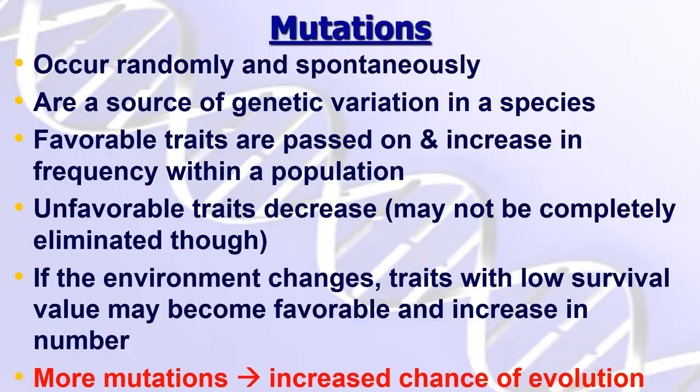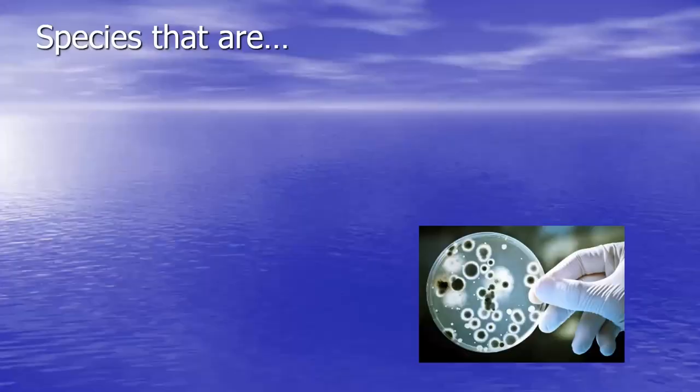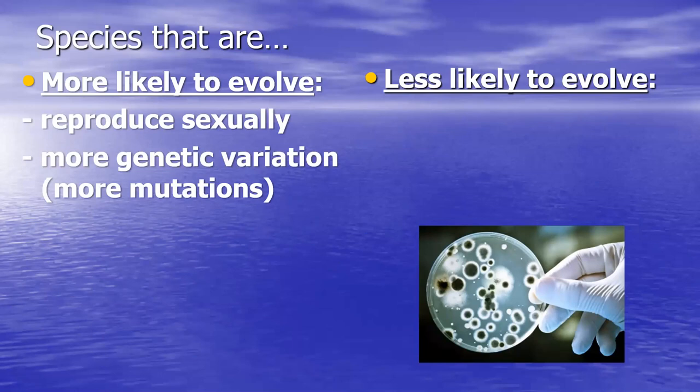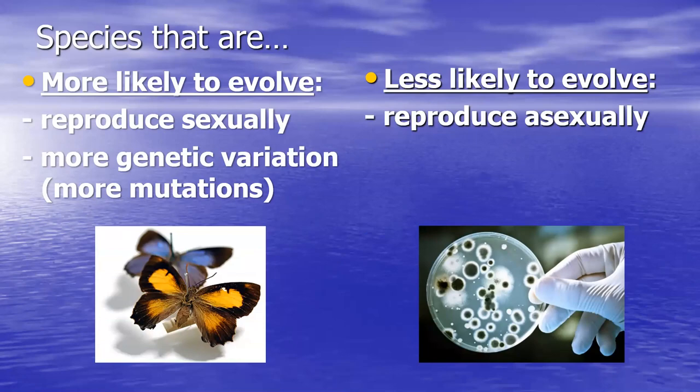Here's who's more likely versus least likely to evolve. If a species is reproducing sexually, it's more likely to evolve than a species reproducing asexually, because sexual reproduction allows and adds to variation and mutation. If a species is reproducing asexually, it's less likely to evolve.